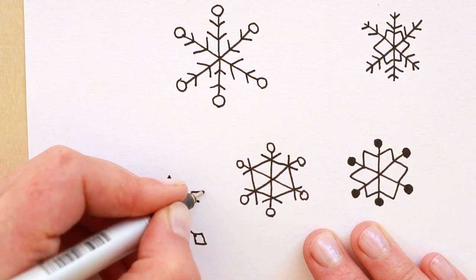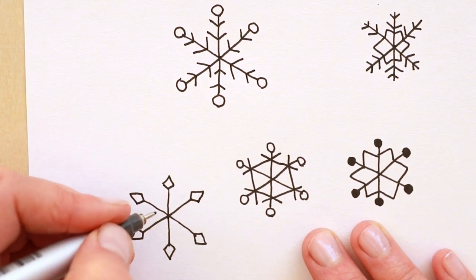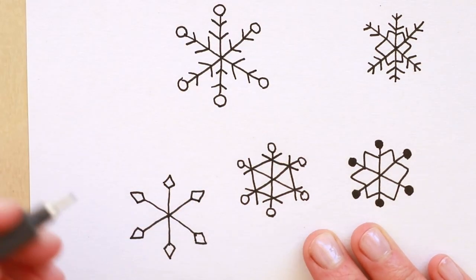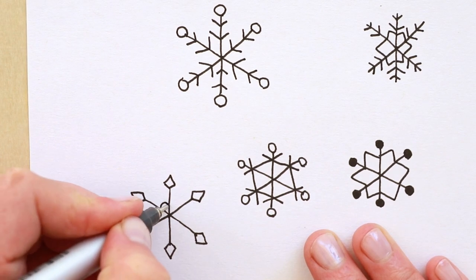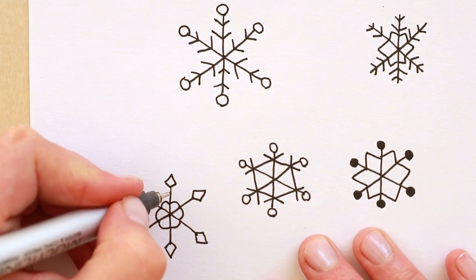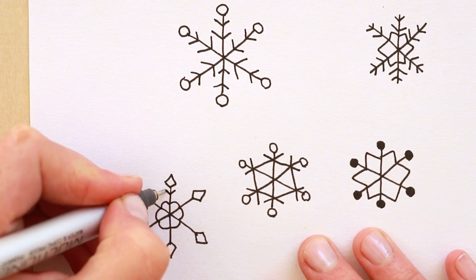And then for the center instead of making a pointed angle like this I'll just make it circle like a flower. This is a little bit more stylized and decorative. I really like this design. And then we can add icicles again.